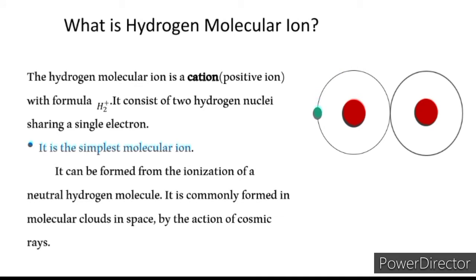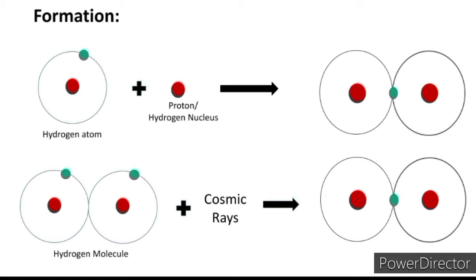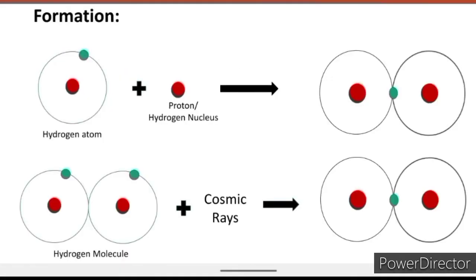If we talk about its formation, there are two types of methods. The first is when a hydrogen atom and a hydrogen nucleus bond together through a covalent bond to form the hydrogen molecular ion. The second is by the ionization of a hydrogen molecule in molecular clouds by the action of cosmic rays.